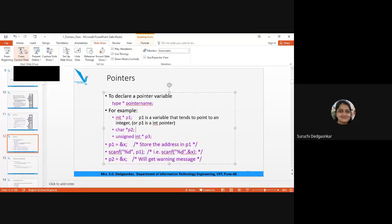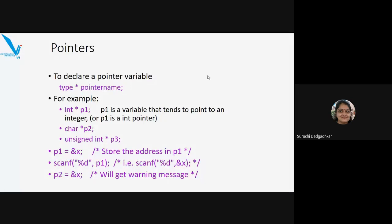The data type of the pointer determines how it is incremented. If your pointer is of type integer, incrementing it advances by one integer space — four bytes in a 64-bit compiler. If the pointer is of character type, the increment will be one byte. So the data type tells you how you are going to treat that particular pointer.